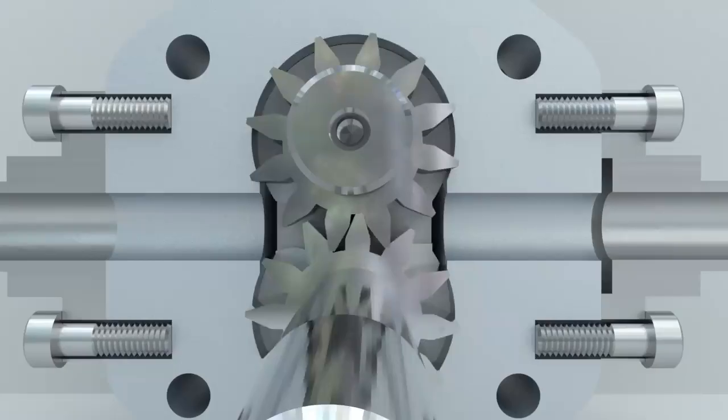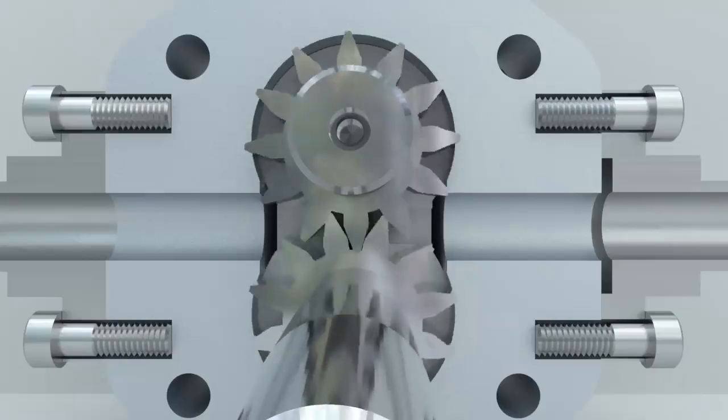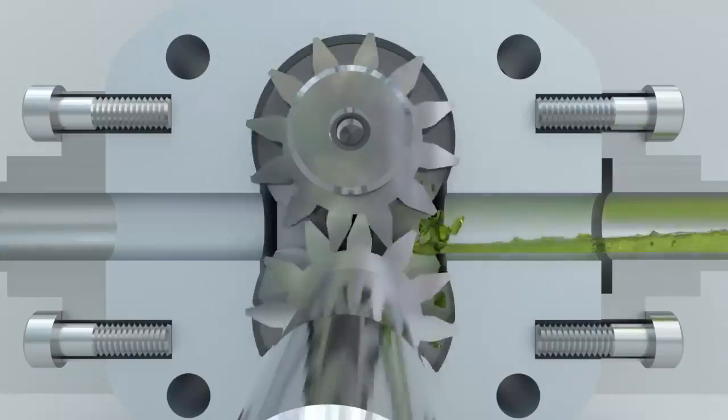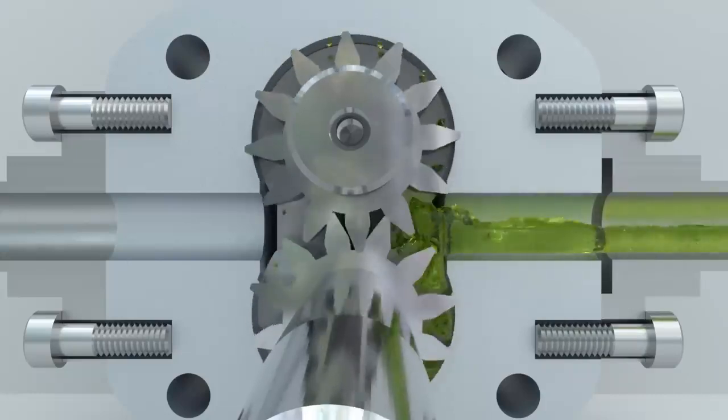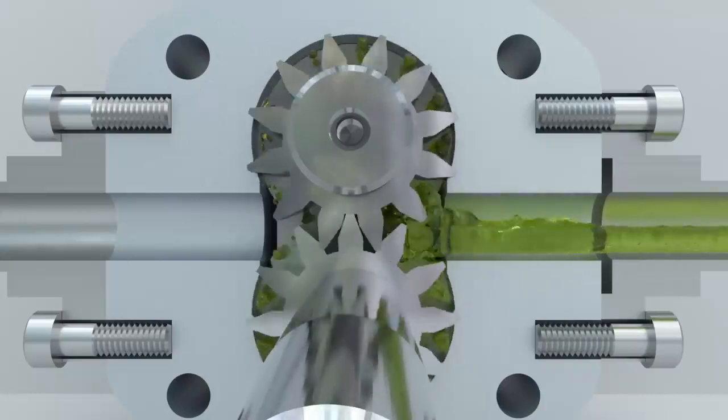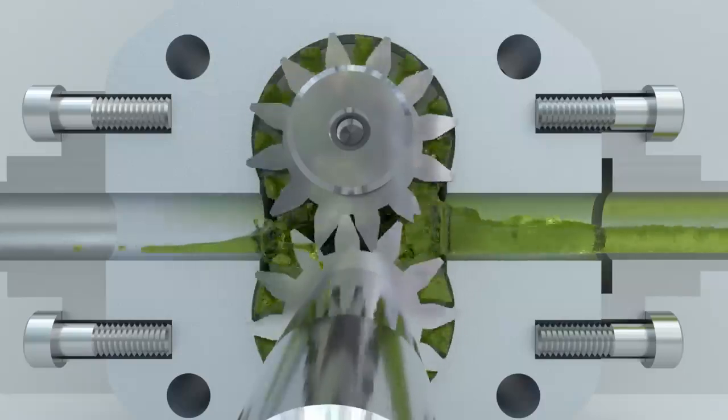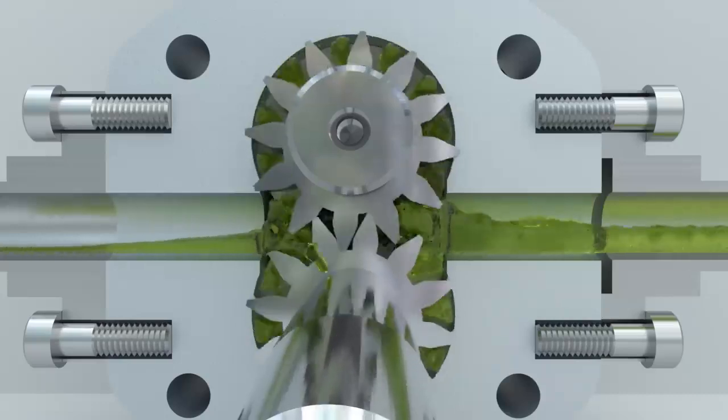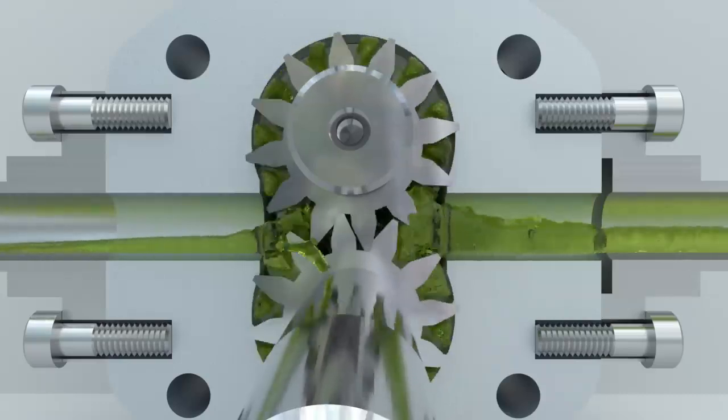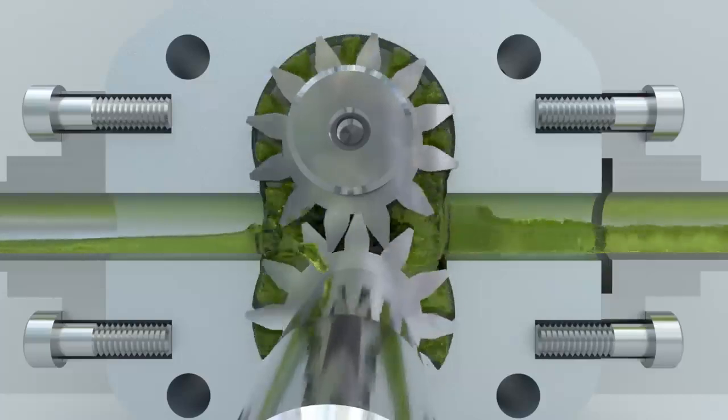As the gears rotate, the fluid flows along the perimeter to the discharge area, where the gear teeth go into the mesh once again. At this point, the chamber volume decreases and the fluid is forced into the pump's discharge channel.